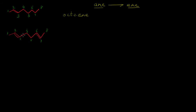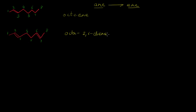While writing the IUPAC name, again we have to take care about the position of the double bonds. The IUPAC name for such a type of alkadiene will become octa-2,6-diene. Here carbon-carbon double bonds are 2, so we must write 'di' as a prefix, and then it will end with '-ene'. So the IUPAC name for this molecule will become octa-2,6-diene.